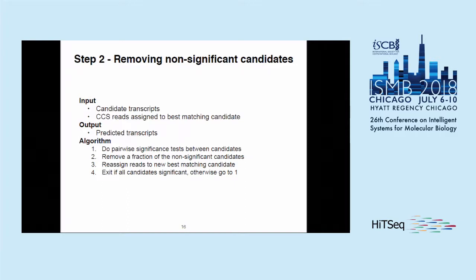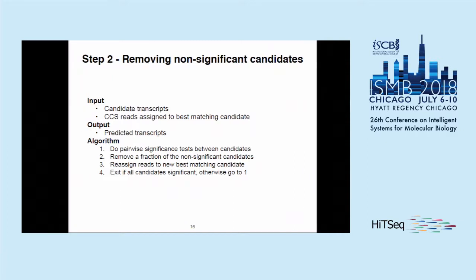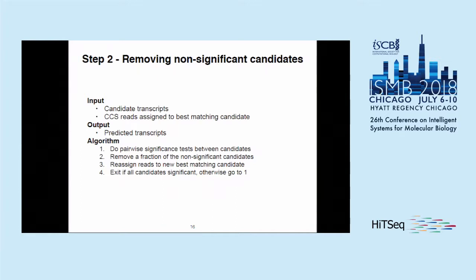The overview of the second step is that we perform pairwise significance tests between all candidates, remove a fraction of candidates that are non-significant, and then reassign the reads that were assigned to filtered-out candidates. We repeat this pairwise testing until all remaining candidates are significant.